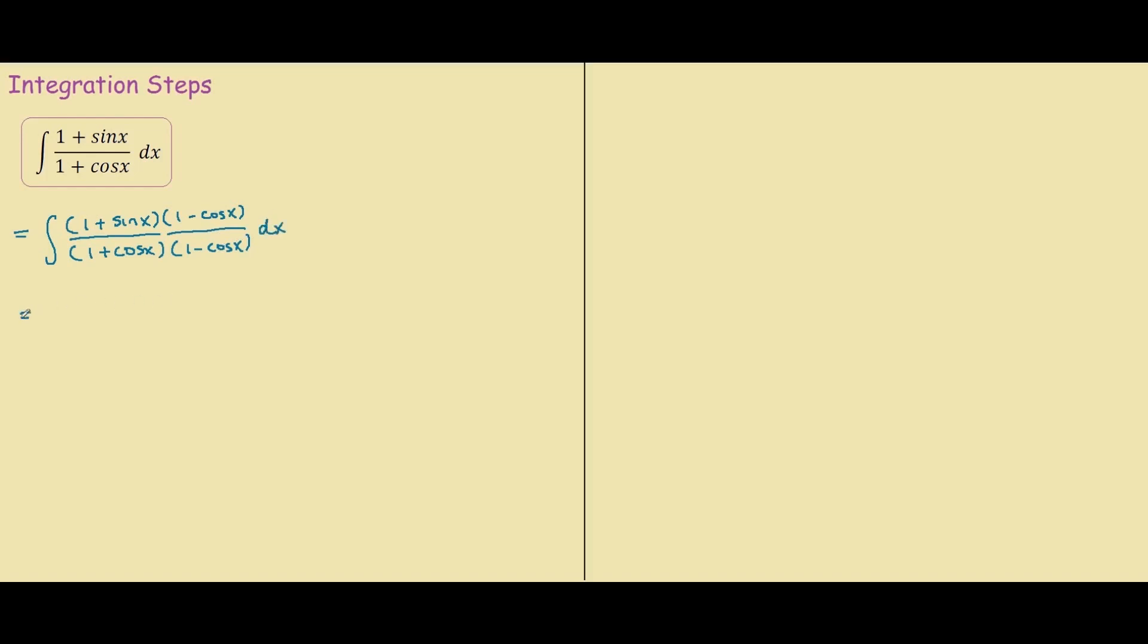And now we expand the brackets out, so we have 1 times 1 is 1 minus cosine x plus sine x minus sine x cosine x.